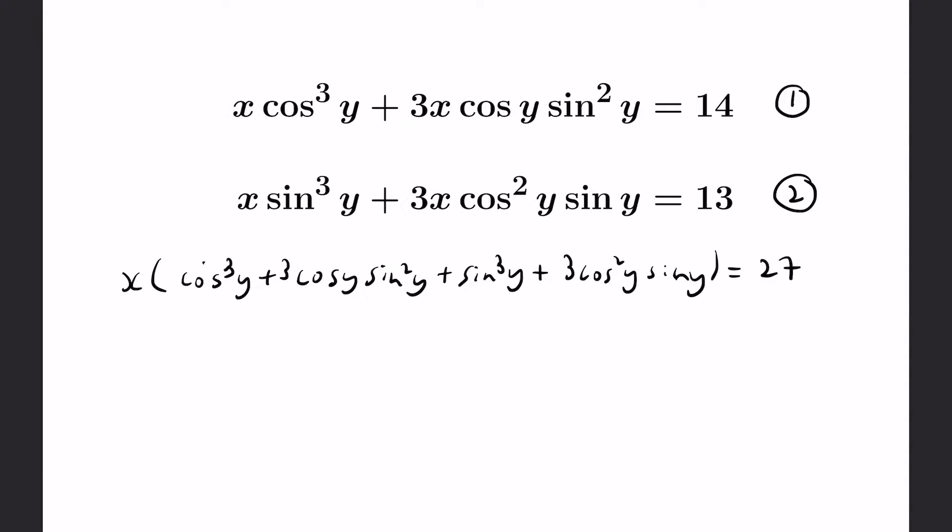Now 27 rings a bell of being a perfect cube. So if there's a perfect cube in here somehow that would be nice, and you can actually see it. If you group that together, you can actually write that as the expansion of cosine y plus sine y all cubed, and that equals 27.